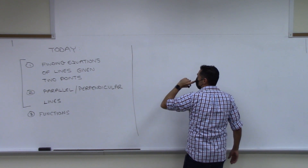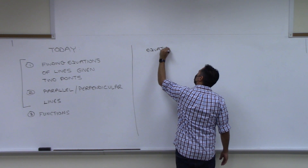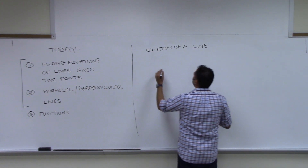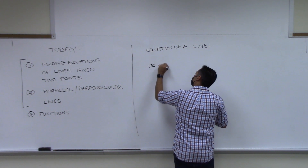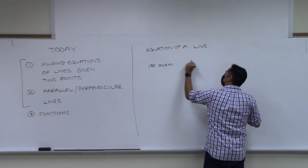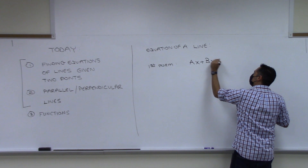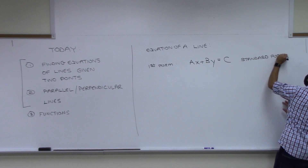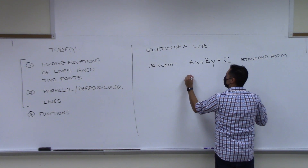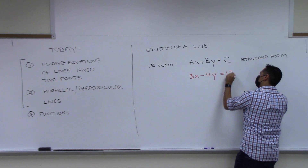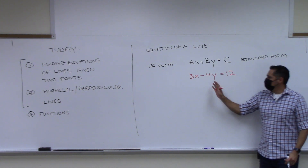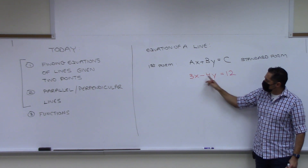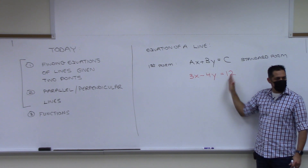The first thing I want to say is that the equation of a line can be written in two different forms. The first form is: some number a in front of x, plus some number b in front of y, equals some number c. This is called standard form. An example would be 3x minus 4y equals 12, where a is 3 and b is negative 4.